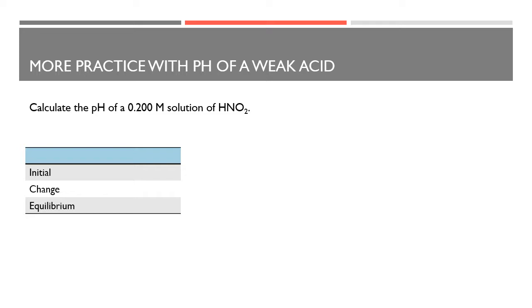Calculate the pH of a 0.200 molar solution of HNO₂. So we have this weak acid. One thing we're going to need is our chart or table of Ka values for different acids, because different acids are going to have different levels of strength, and that chart will tell us how strong or how weak our acid is. The first thing I'm going to do is write out the equilibrium reaction, and this will help me with my equilibrium constant expression.